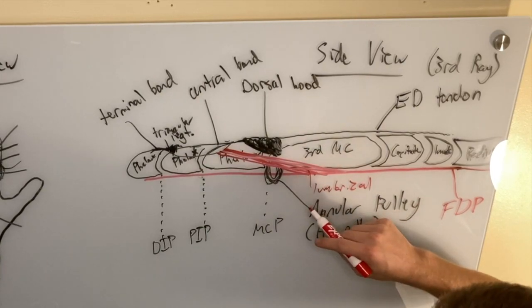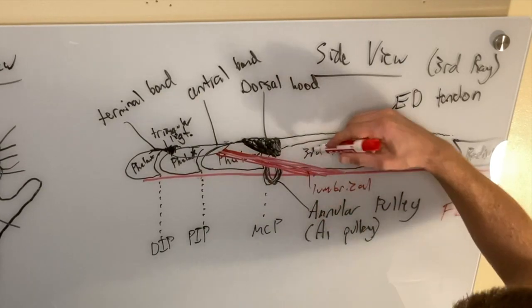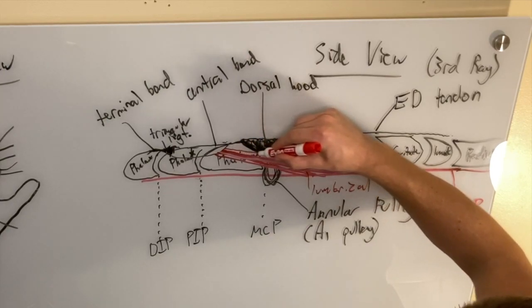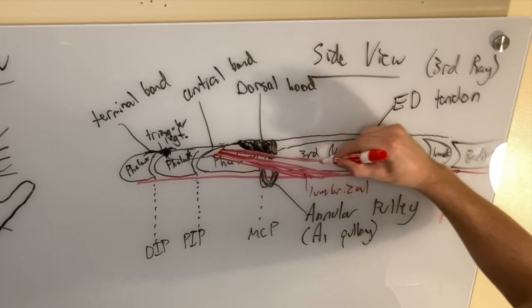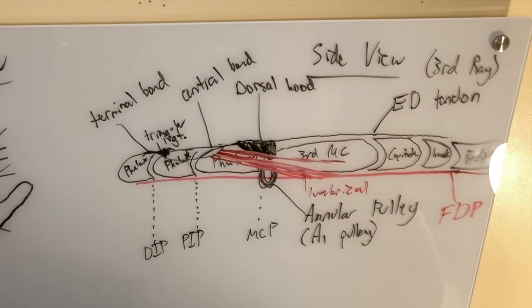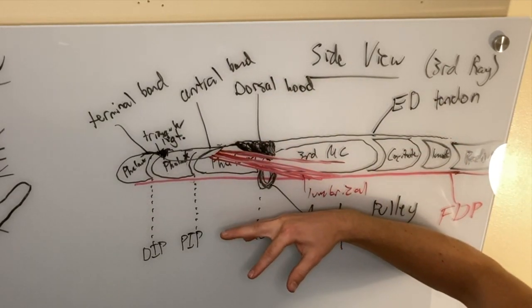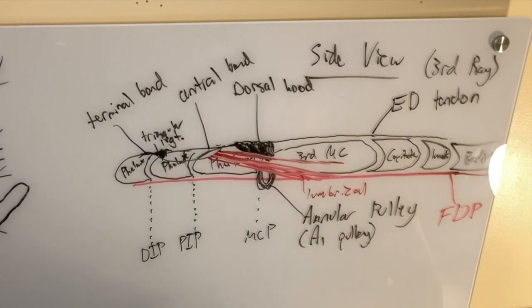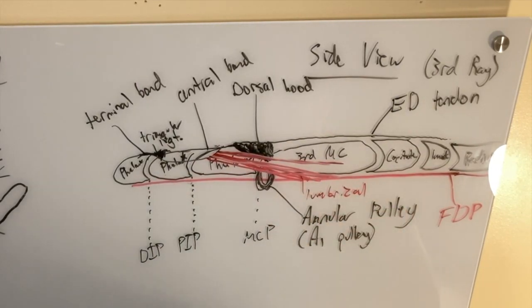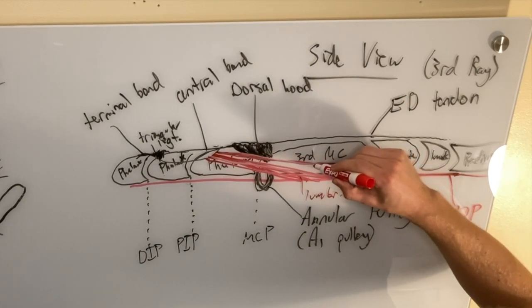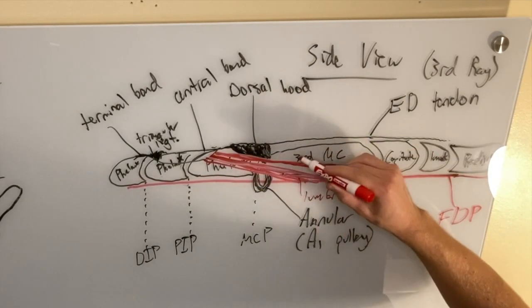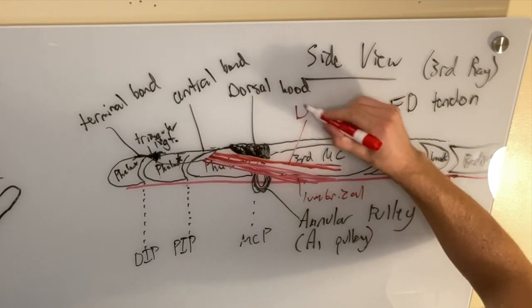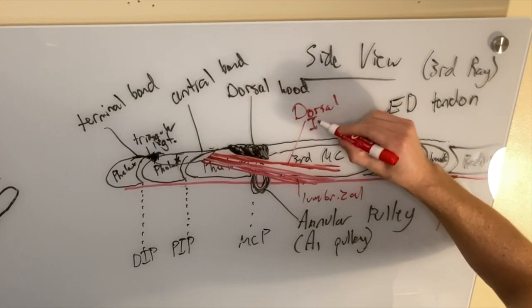What else do we have? We also have the interossei and those are coming off of the metacarpal. So it depends on which side you're on. But if this was the third metacarpal, it would be dorsal interossei on either side. So this would be, that's a lumbrical. And then we have dorsal interossei.